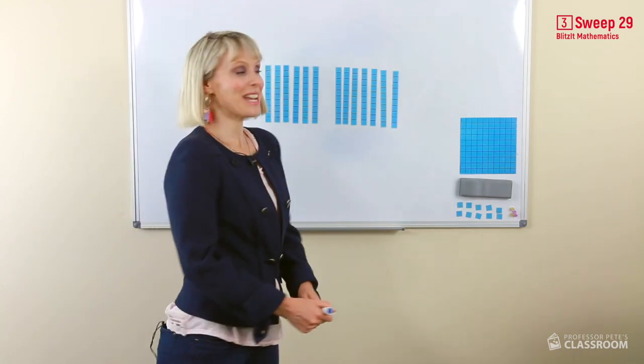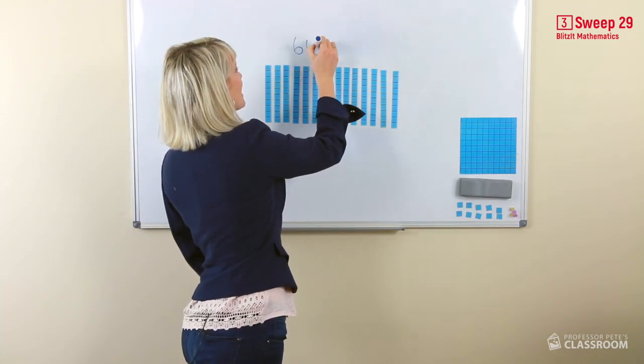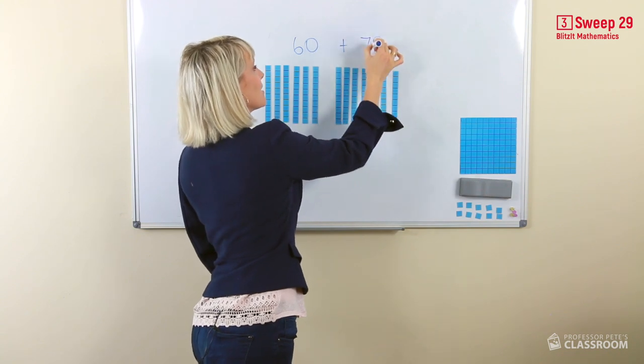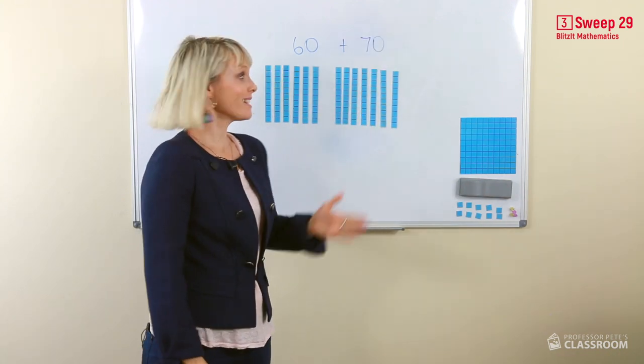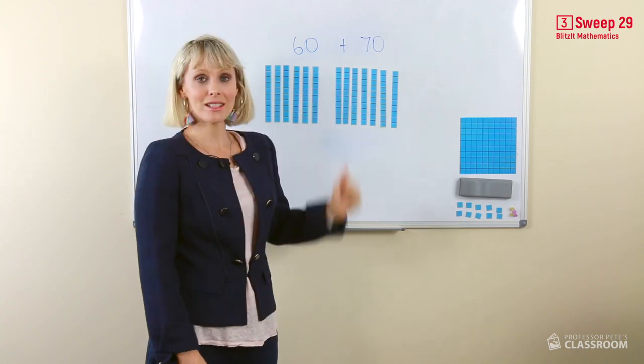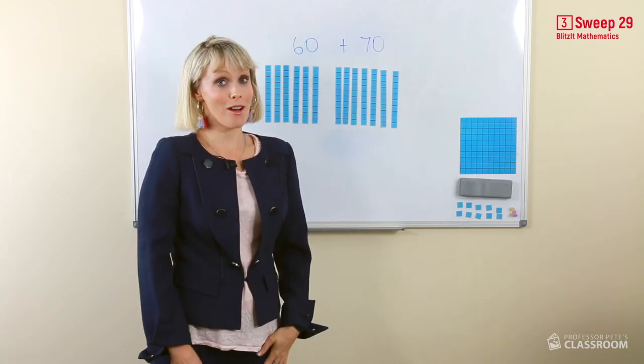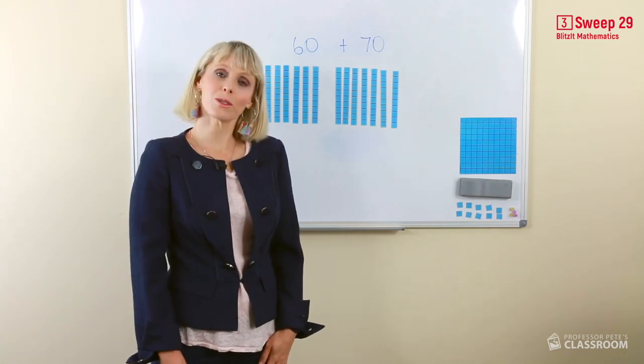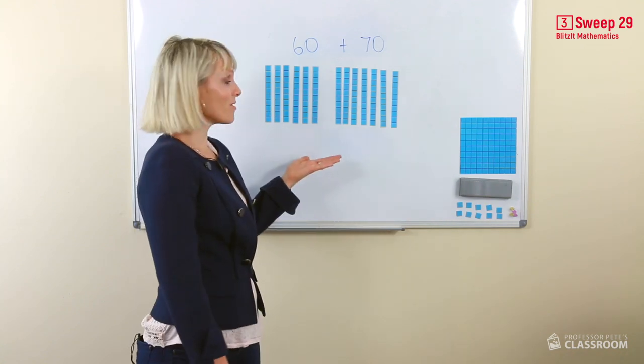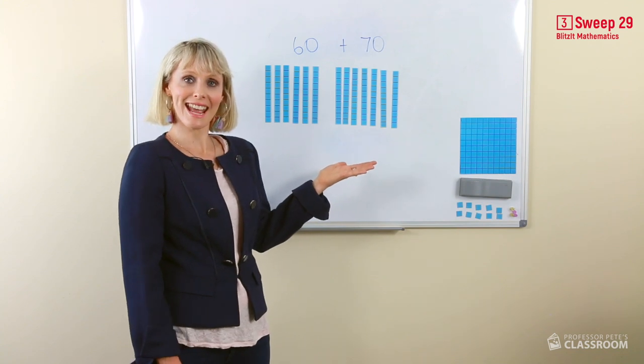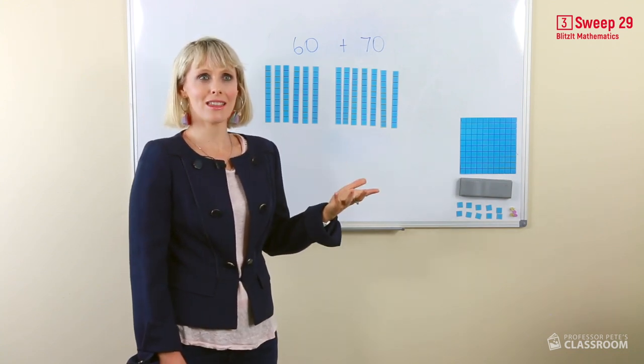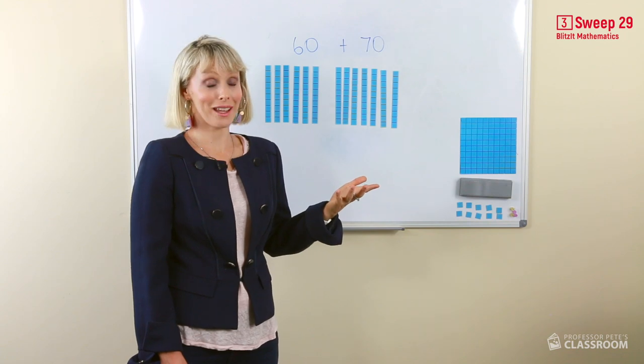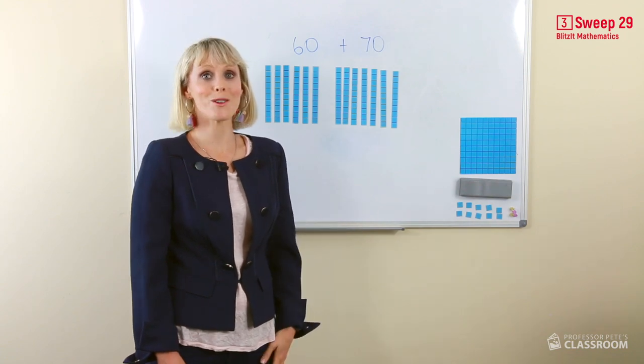Alrighty, here we have 60 add 70. Now we know that we can also say this as six tens add seven tens. Because we know our addition number facts, we know that six and seven equals thirteen. Therefore, this is thirteen tens. But how do we write and say thirteen tens? We are going to need to regroup.